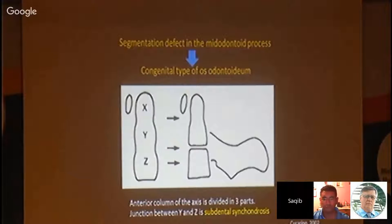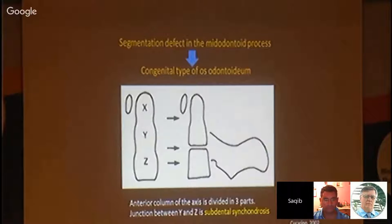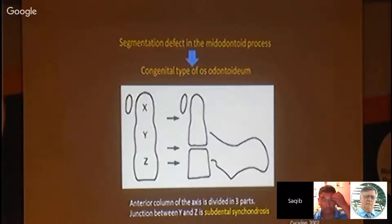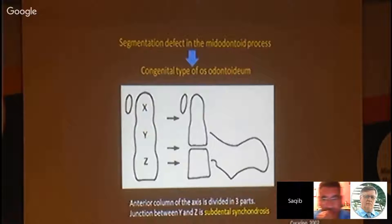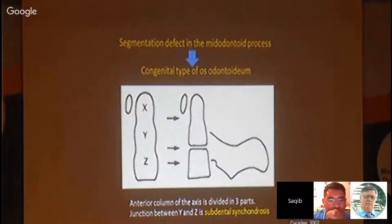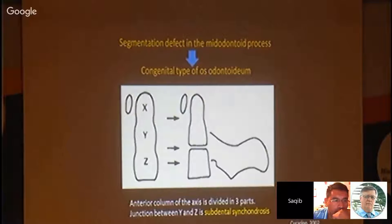I found one paper suggesting that a segmentation defect in the mid-odontoid process is the reason for the congenital type of odontoid growth. In childhood we can see the paramedic syndrome on MRI images. But if that synchondrosis is not really ossified, it may cause os odontoideum — the congenital type.